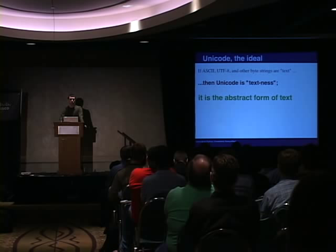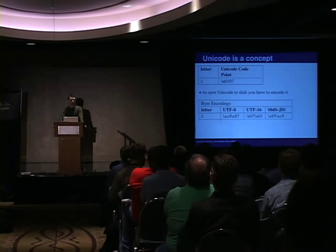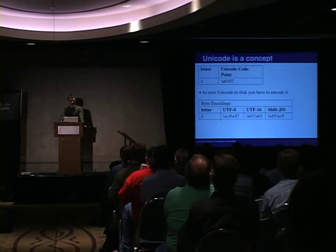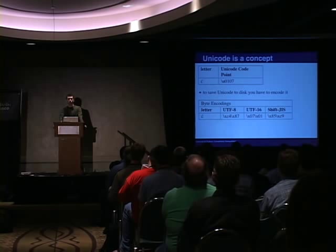Here is the C with the hatchet again. You see it maps to hex 0107 in Unicode. But to save to disk, you'll have to encode it into a byte encoding. We've already seen the UTF-8 one, which consists of two bytes. But the UTF-16 one consists of two different bytes. And I've also put the Shift JIS encoding in here, which is popular for Japanese, and that does it in a completely different set of two bytes.